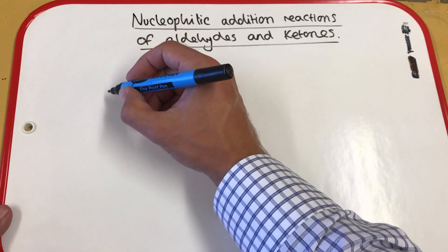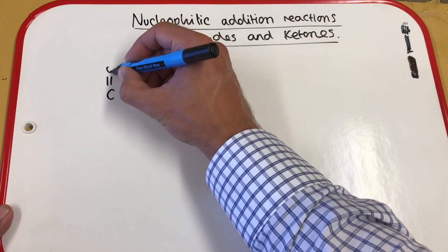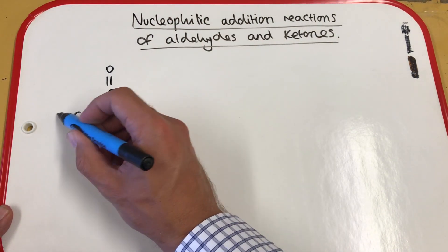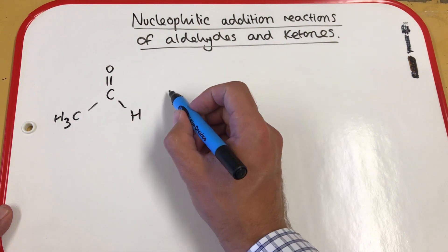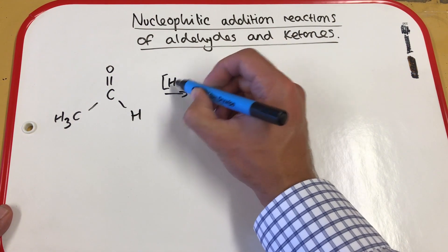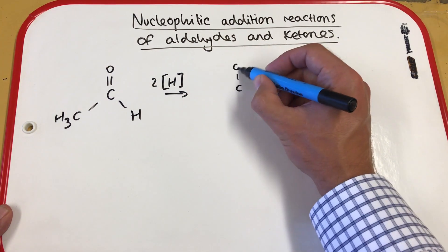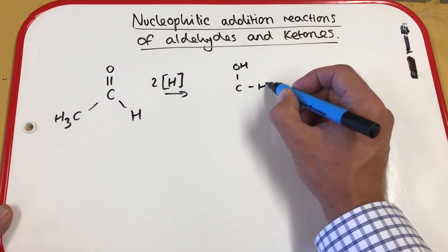First of all, we're going to look at an aldehyde. If we start off with ethanal, we're going to convert ethanal by reducing it into an alcohol. The alcohol we're going to make from this will be ethanol.